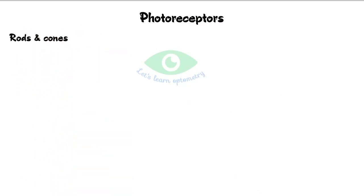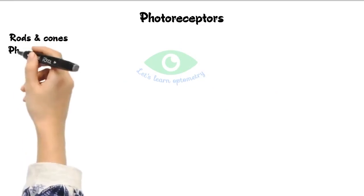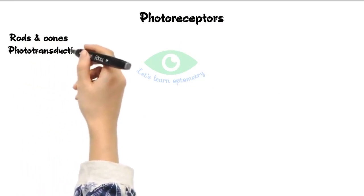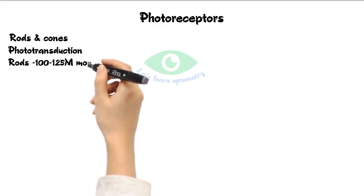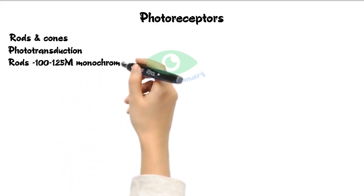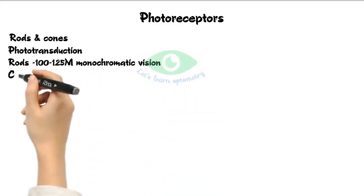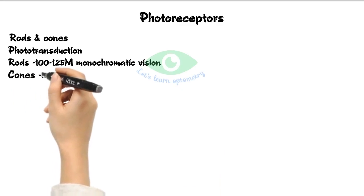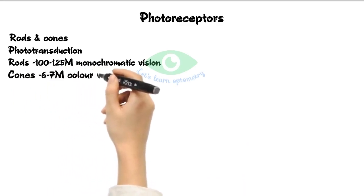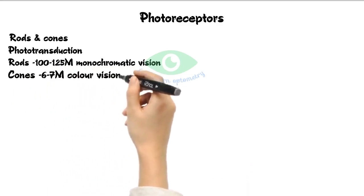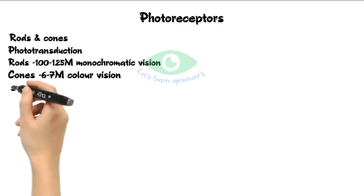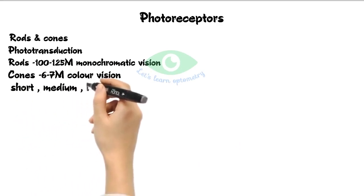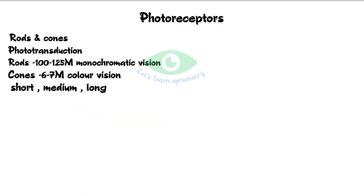Photoreceptors — rods and cones together — convert light energy into neural signals; this is the site of phototransduction. Rods: there are 100 to 125 million rods, responsible for monochromatic vision. Cones: there are 6 to 7 million cones, responsible for color vision. There are three types of cones: short wavelength, medium wavelength, and long wavelength cones.